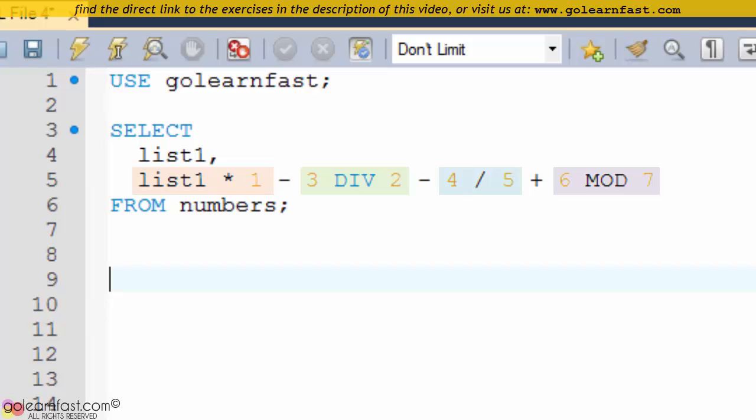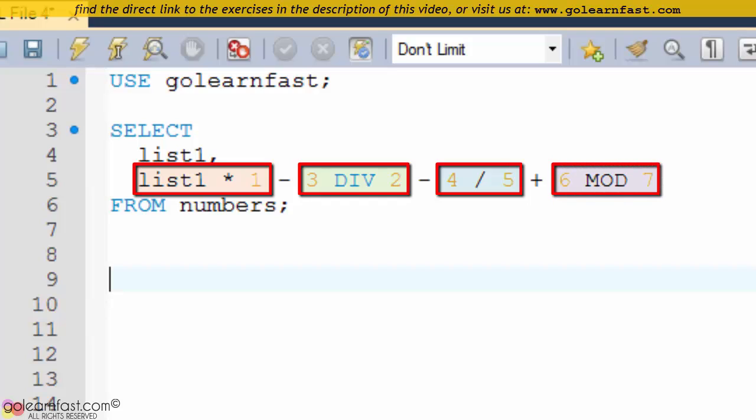Then it performs addition and subtraction operations from left to right, which means that one minus that one minus that one plus that one. Let's execute this statement.